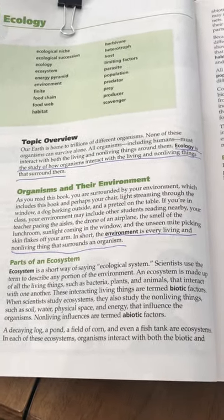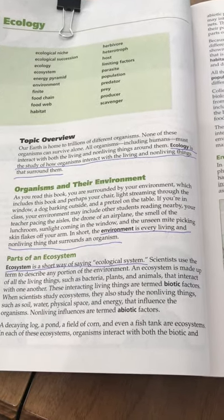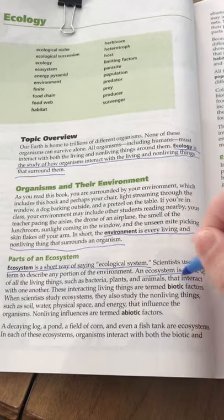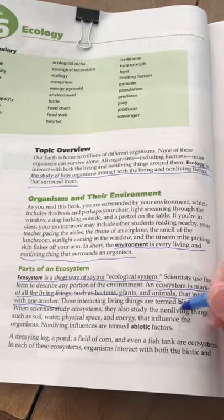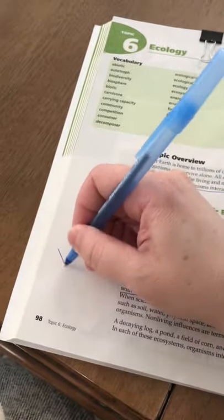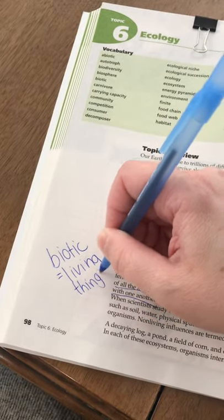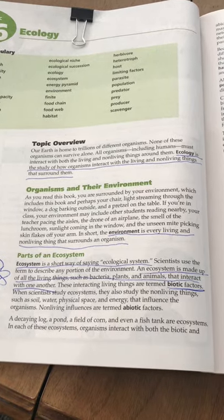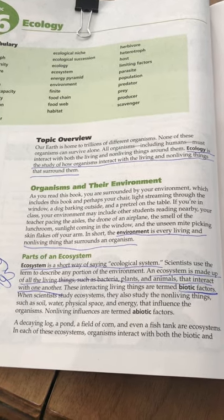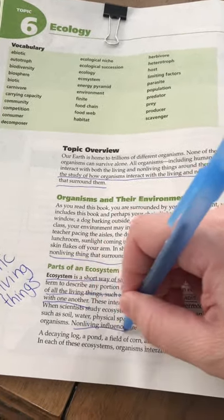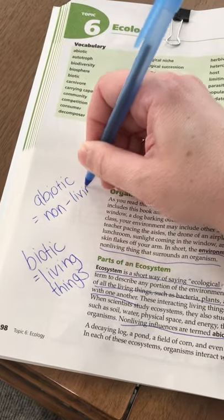Parts of Ecosystems. Ecosystem is a short way of saying ecological system. Scientists use the term to describe any portion of the environment. An ecosystem is made up of all living things such as bacteria, plants, and animals that interact with one another. These interacting living things are termed biotic factors — biotic equals living things. When scientists study ecosystems, they also study the non-living things, such as soil, water, physical space, and energy that influence the organisms. Non-living influences are termed abiotic factors — abiotic is non-living things.